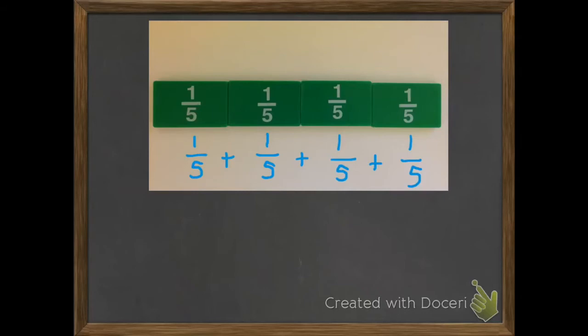It's pretty simple. We take our numerators, and we have one, two, three, four. So we have four of these pieces, and these are fifths. So we have four fifths.